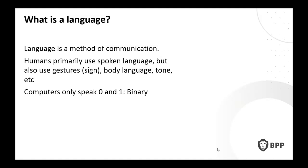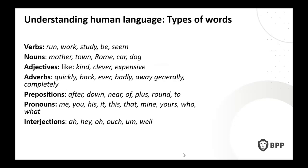All of that processing comes down to getting computers to behave like humans. So to do that, we need to understand how humans work. This brings us back to GCSE English — we're probably all familiar with verbs, nouns, adjectives, adverbs, prepositions, pronouns, and interjections. In computing we sometimes call those last ones 'stop words.' We need to be able to tell the computer what type of word each one is.